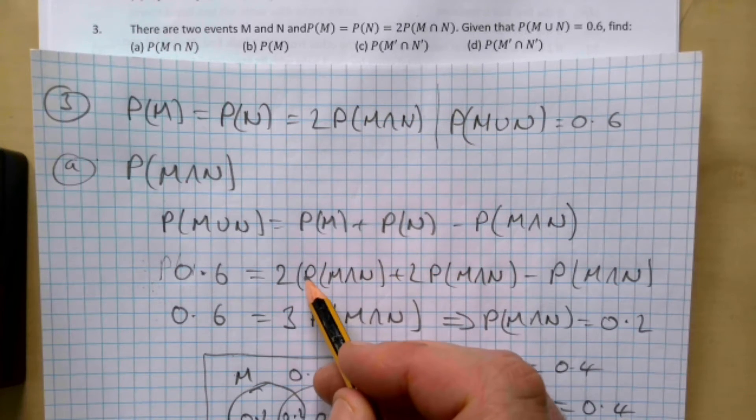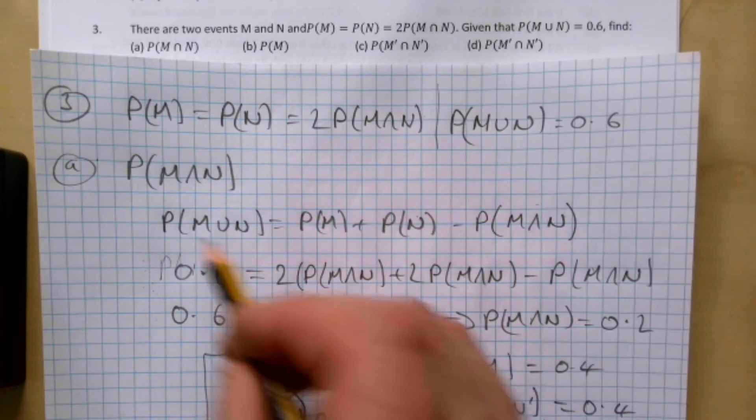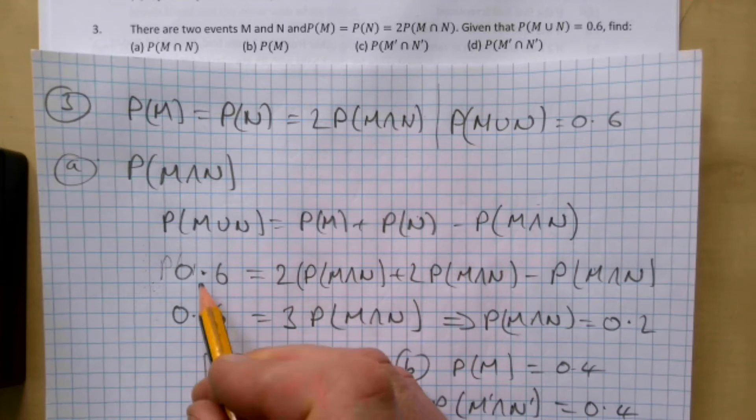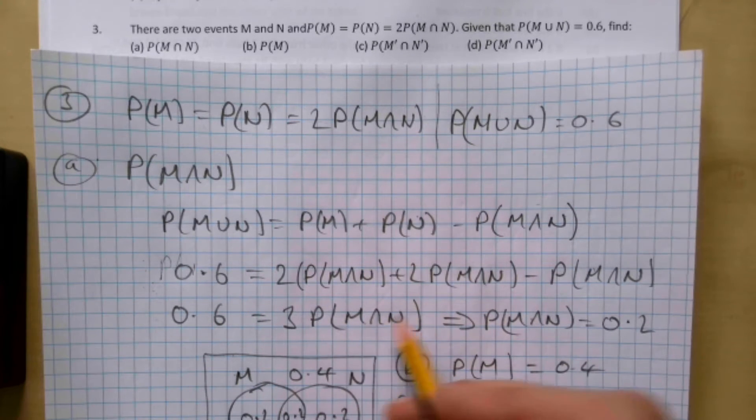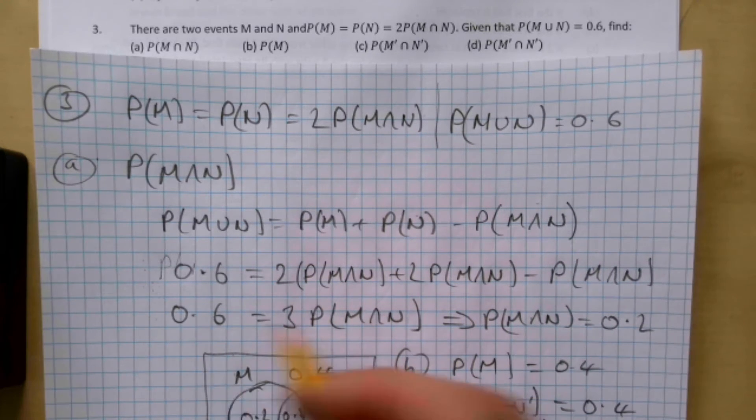can just change this for this, and this then stays as it is. Probability of M or N is 0.6, so we can write: 0.6 equals three times the probability of M and N, because 2 plus 2 take away 1 is going to give us that. That means dividing both sides by 3, the probability of M and N is 0.2. Now, I can see this straight off from the question.